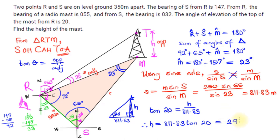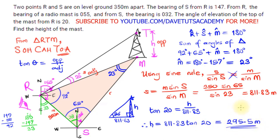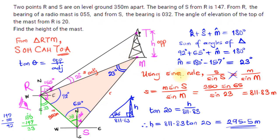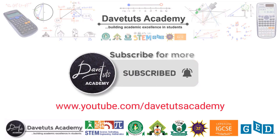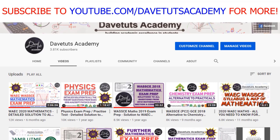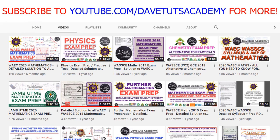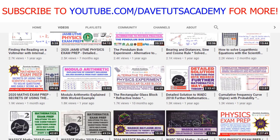Just like that, we've been able to get the answer. This shows the importance of correctly interpreting the question to identify the two different triangles: the one on the ground level using bearings, and the other including the height of the mast using the angle of elevation. Together, these allowed us to effectively solve the question. Go ahead, subscribe to our channel, like the videos, share with your friends and loved ones, and together let's build academic excellence.